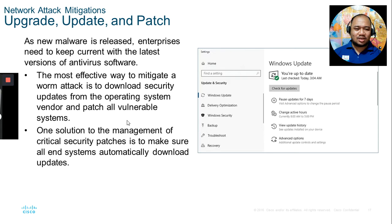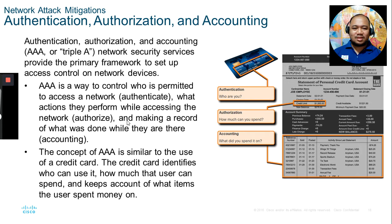AAA stands for Authentication, Authorization, and Accounting. It is a way to control who is permitted to access a network, what actions they can perform while accessing the network, and to maintain a record of what was done while they are connected.